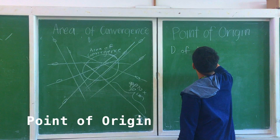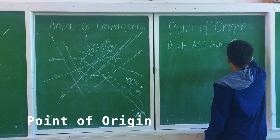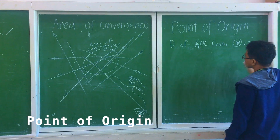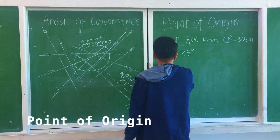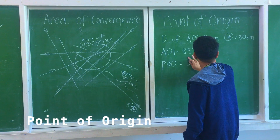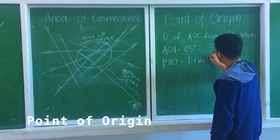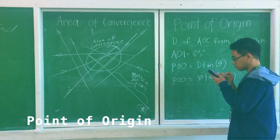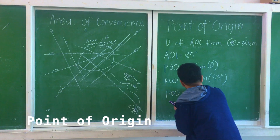From this, we can solve for the point of origin by substituting the values solved earlier: the distance of the mentioned blood stain from the area of convergence being 30 cm, and the angle of impact being 85 degrees. Using the formula P = D × tan(A), we get P equal to 5.37 cm.